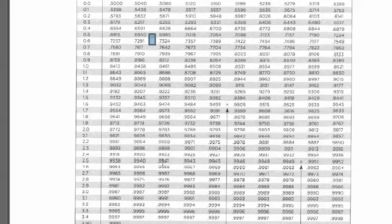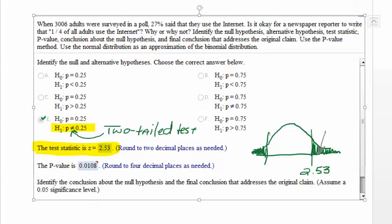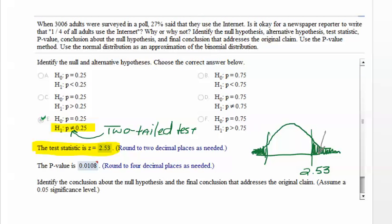When I look up 2.53, what I have is the area. Let's see, 2.5, 0, 1, 2, 3, point nine nine four three. But remember that gives us the area from this mark to the left, so that's the area there, point nine nine four three.